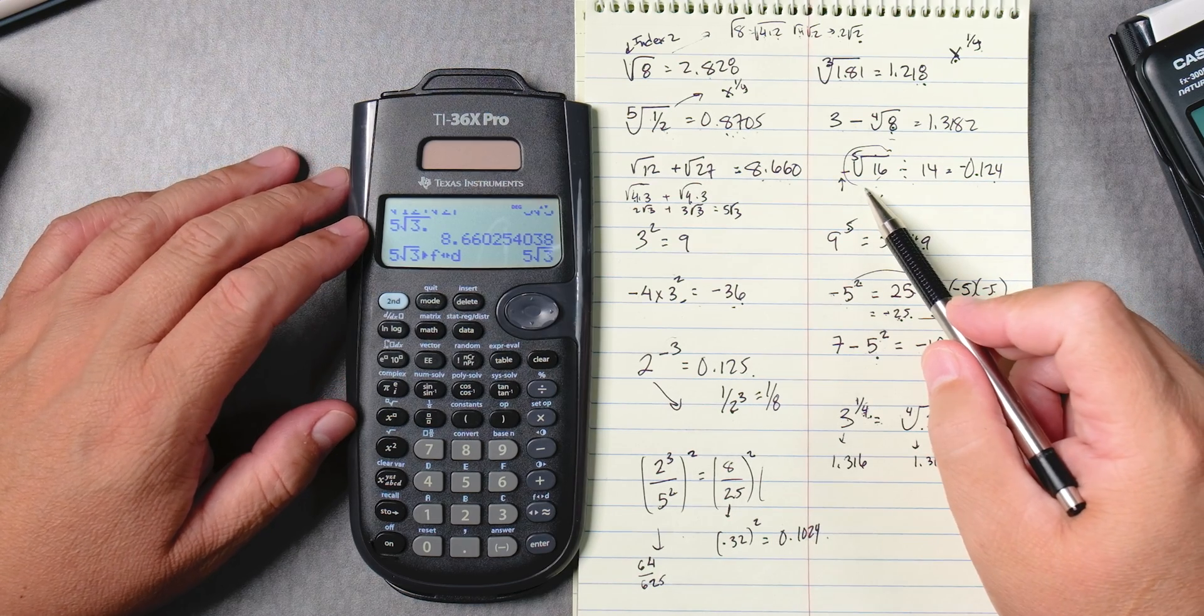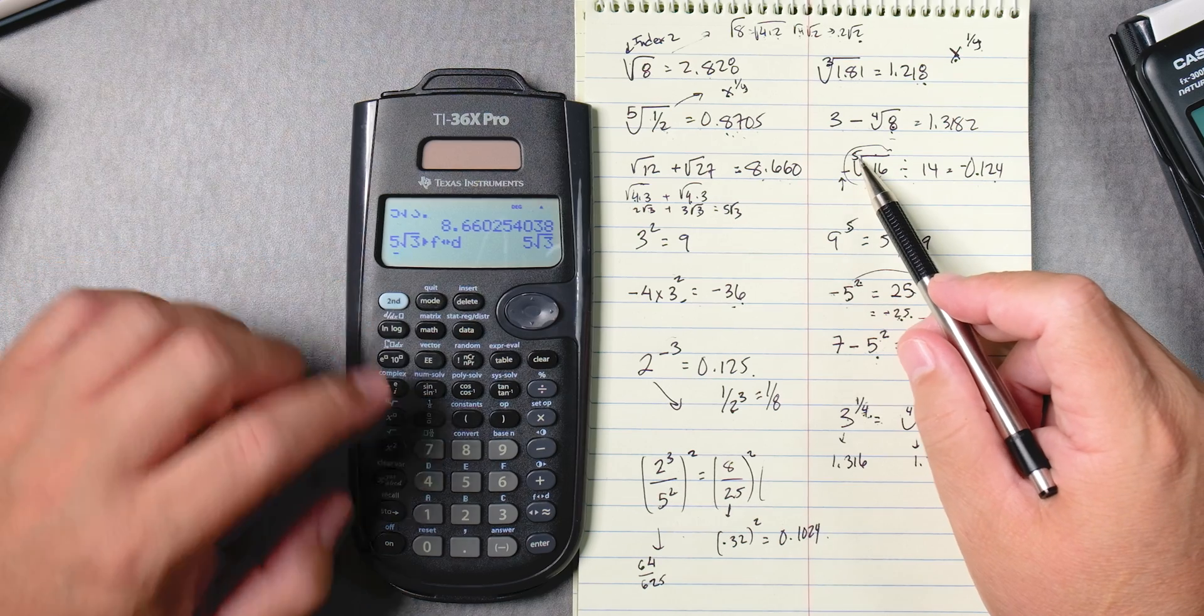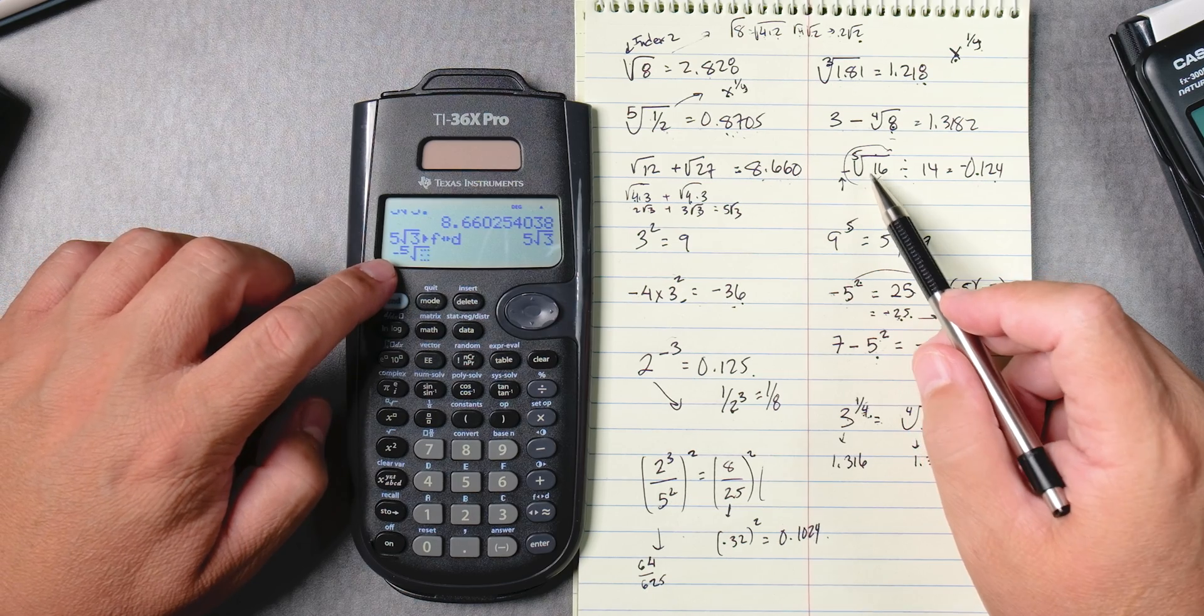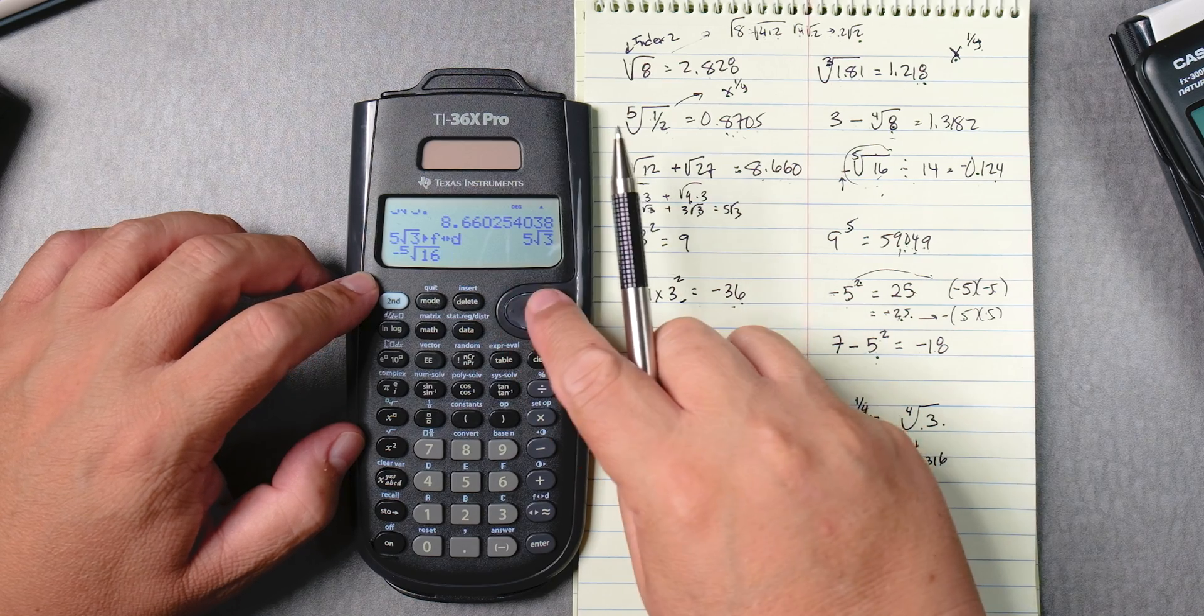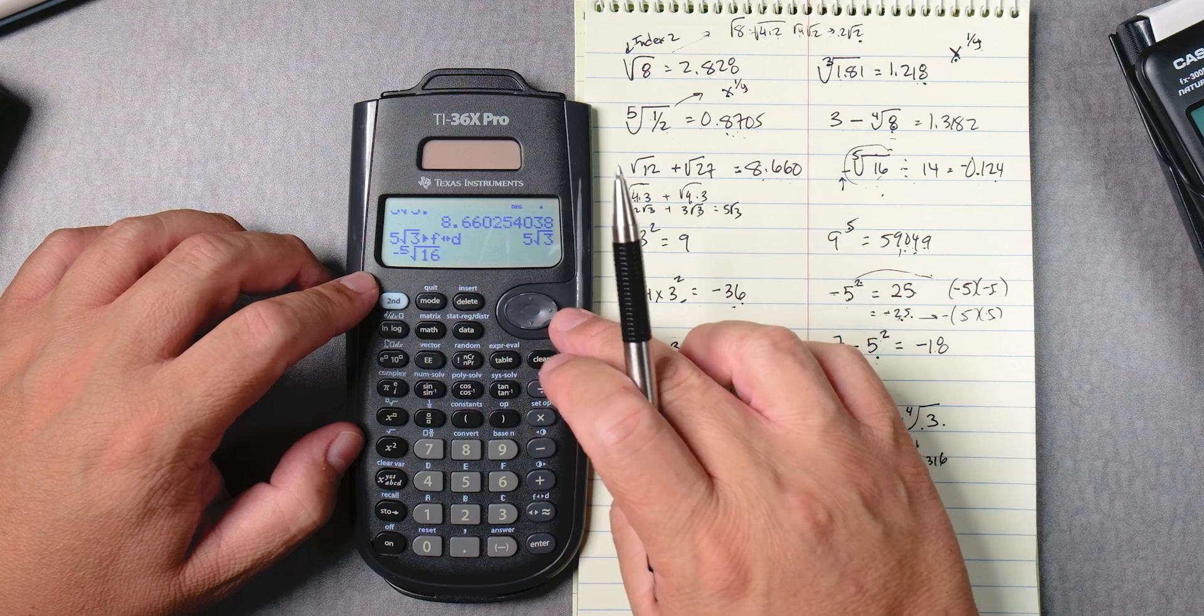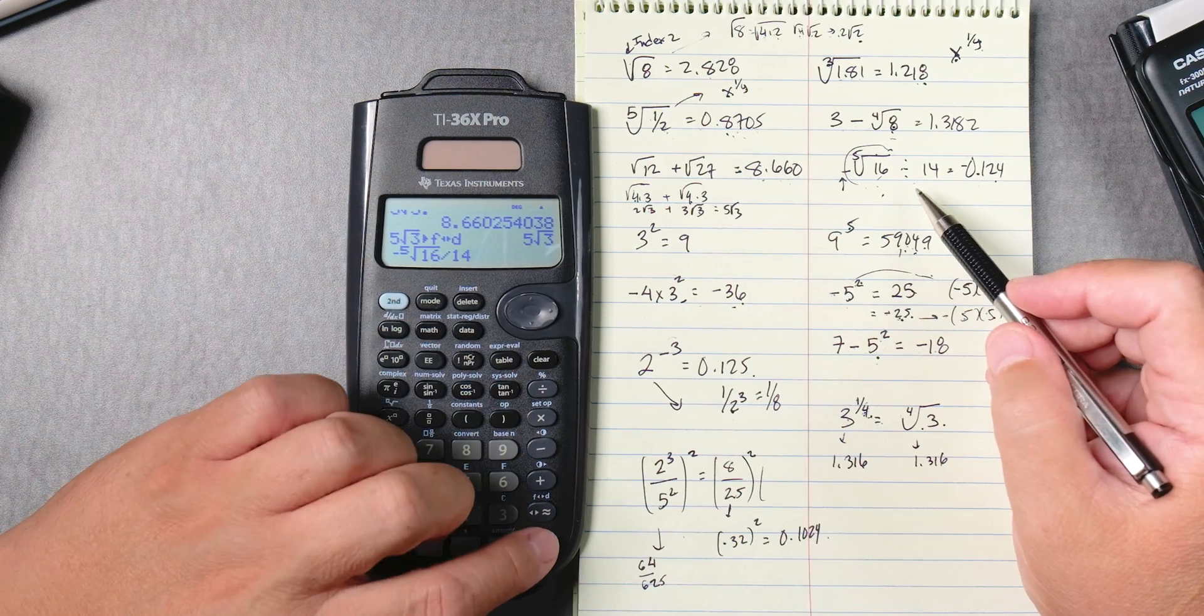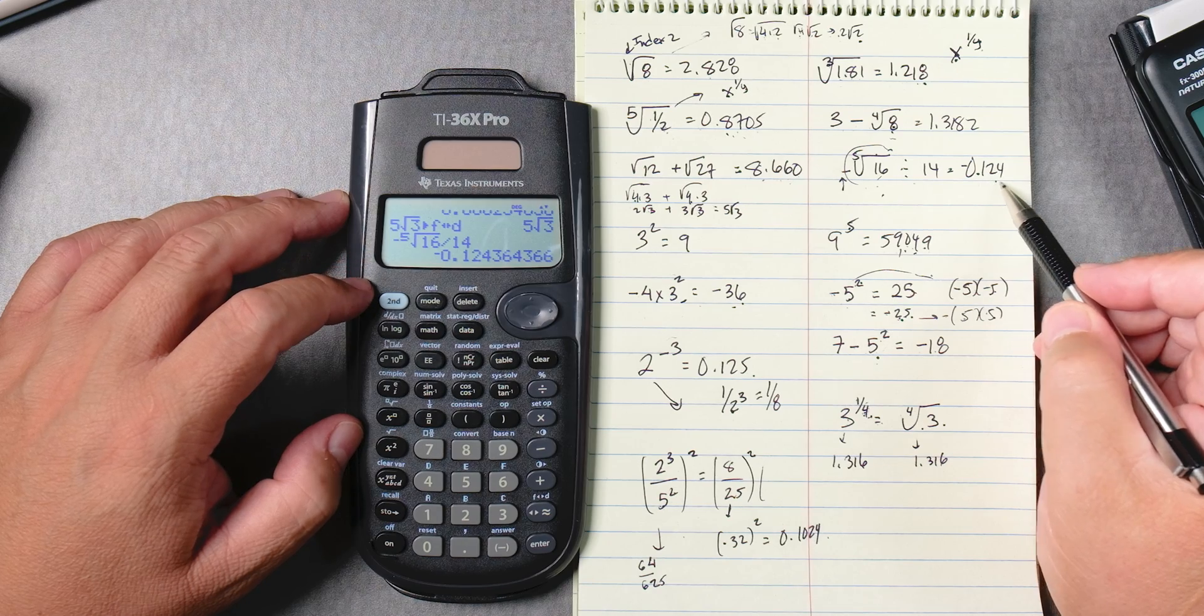So this one, we can type negative, and we can put a 5 second, x to the box. So it's a fifth root of what? 16. Then get out of that by pressing this tab, this d tab, this pad, you push it over to the right, then divide, 14, enter, negative 0.124.